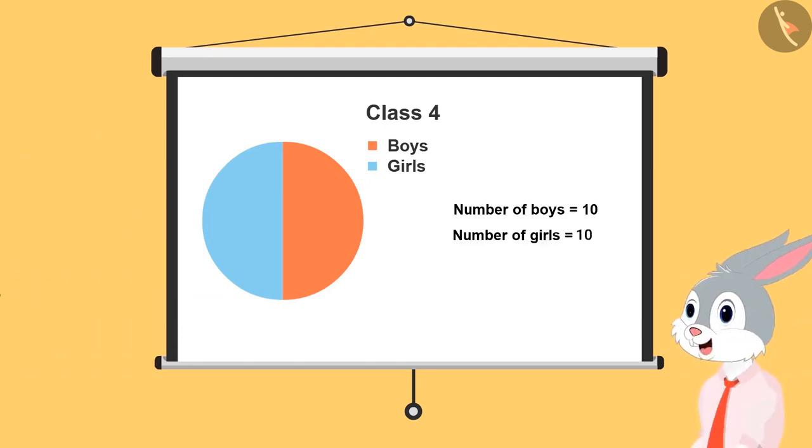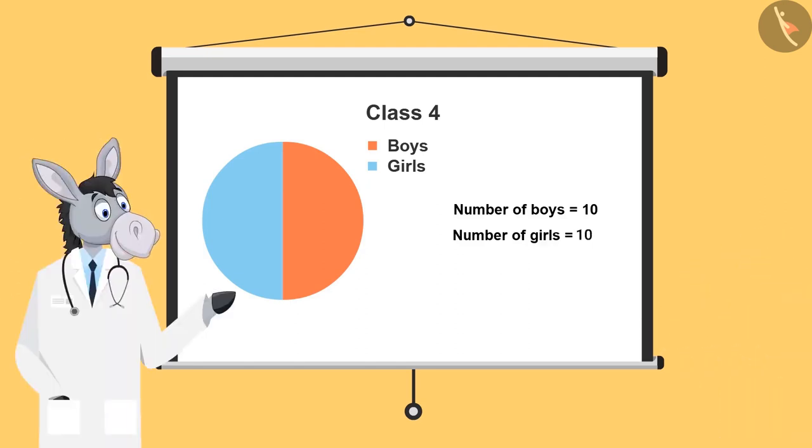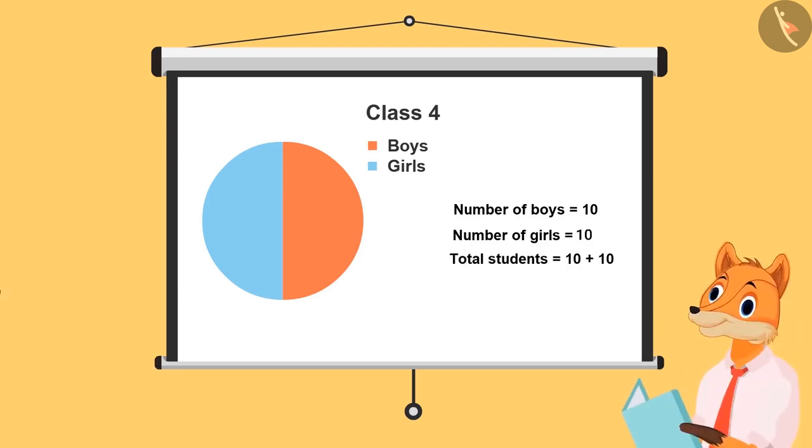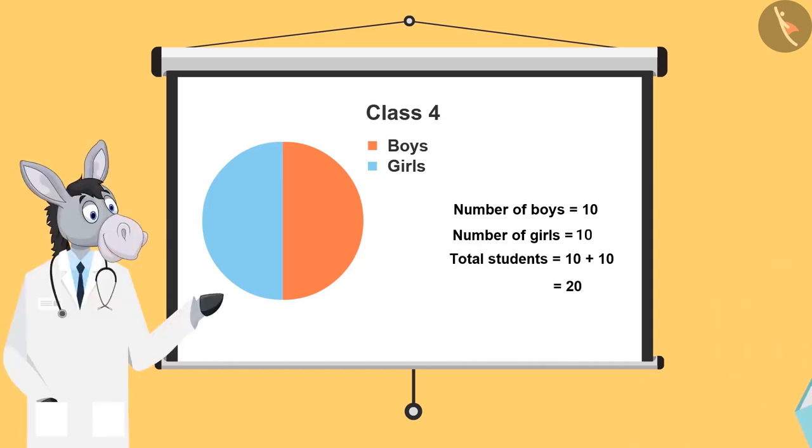10. Right. So, what is the total number of students in the class? 10 and 10 is 20. Very good.